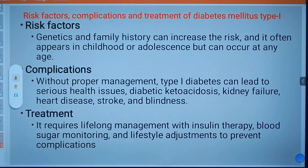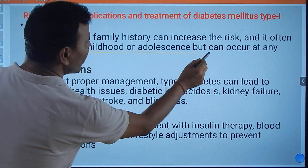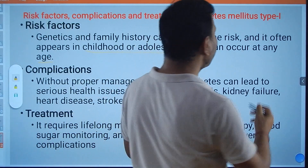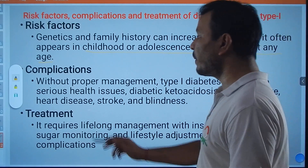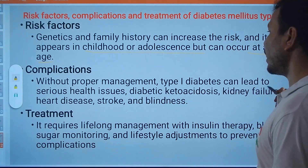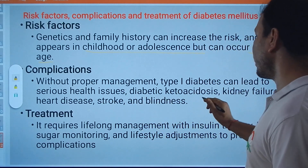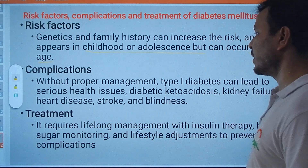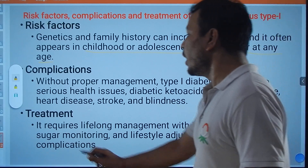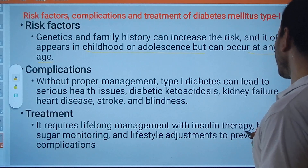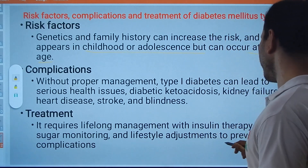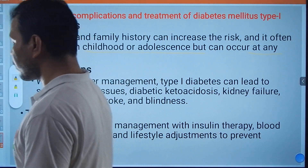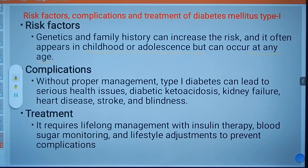Risk factors include genetic and family history, and the disease often appears in childhood or adolescence, though it can occur at any age. Without proper management, Type 1 Diabetes Mellitus can lead to serious complications such as diabetic ketoacidosis, kidney failure, heart disease, stroke, and blindness. Treatment requires lifelong management with insulin therapy, blood sugar monitoring, and lifestyle adjustments to prevent complications. In the next class, we will talk about other autoimmune diseases.